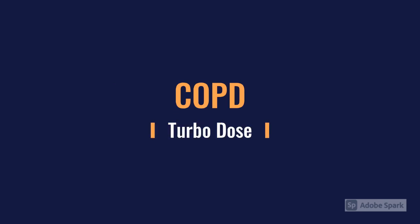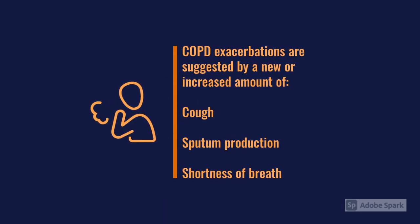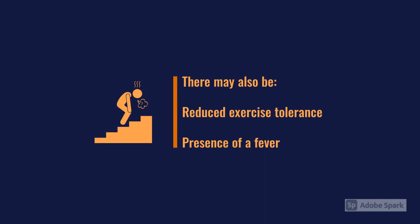In the context of an acute exacerbation of COPD, we're looking for signs of chronic COPD alongside that acute-on-chronic presentation. There will be a new or increased cough, sputum production may be increased, and there may be an increase in shortness of breath. Some more subtle signs include a reduced exercise tolerance.